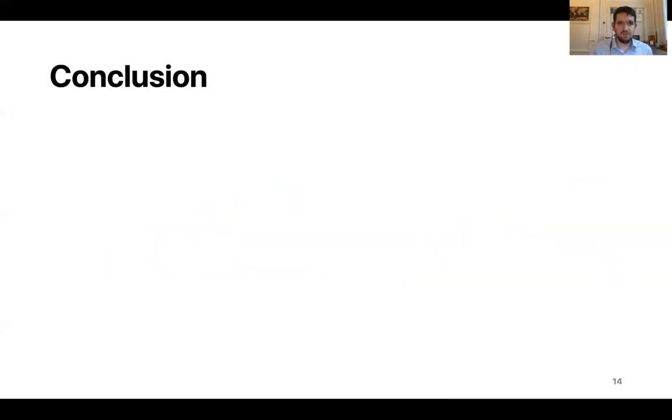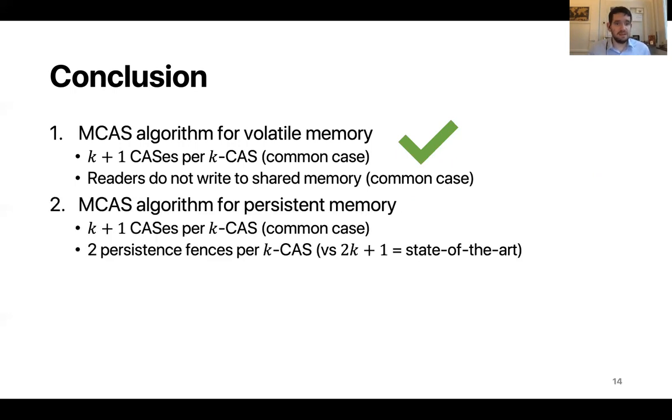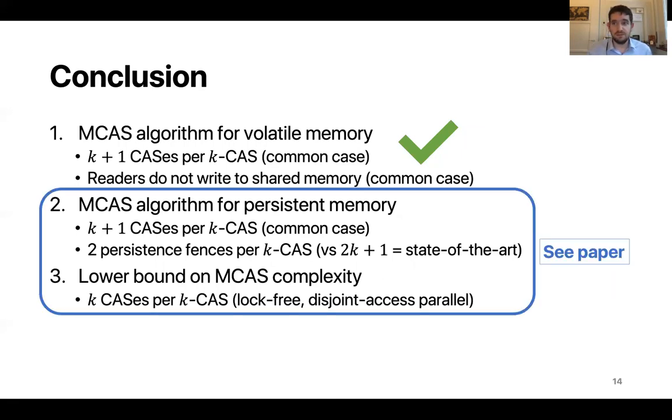This brings me to the conclusion of my talk. Hopefully in this presentation today, I have given you the intuition behind our efficient MCAS algorithm for volatile memory. Our algorithm uses k plus one CASes for a k word MCAS in the common uncontended case. It also has the desirable property that the readers do not write to shared memory when there is no contention. We have two other contributions: an MCAS algorithm for persistent memory, which is also very efficient, and the lower bound on MCAS complexity, which shows that our algorithms are nearly optimal. For these two last contributions, I invite you to check out our paper. Thank you very much for your attention.